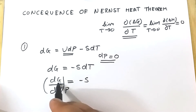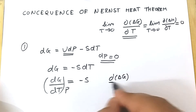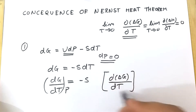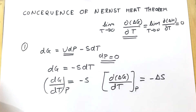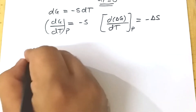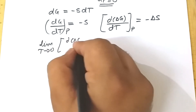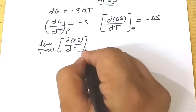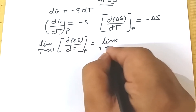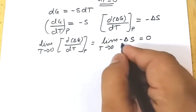If we change free energy, entropy will also change. So we can write d(ΔG)/dT at constant pressure equals −ΔS. Applying Nernst Heat Theorem by taking the limit on both sides: the limit as T tends to zero of d(ΔG)/dT at constant pressure equals the limit as T tends to zero of −ΔS, which equals zero.